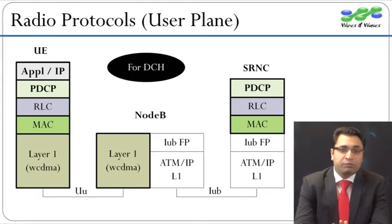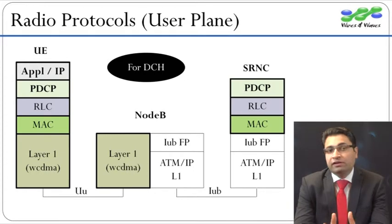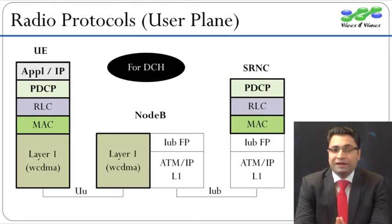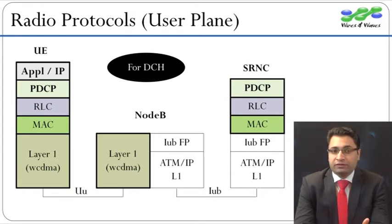The MAC layer performs functions like transport format selection. In simple words, MAC decides instantaneous bit rates. Now based on the selected transport format, one or more transport blocks are given to the physical layer. This transaction happens once every TTI, or Transmission Time Interval.